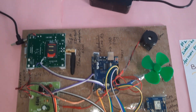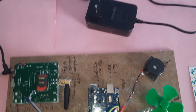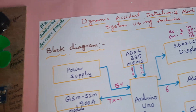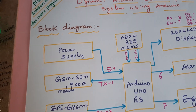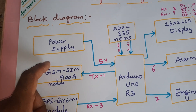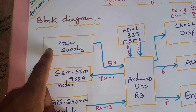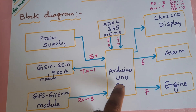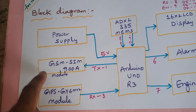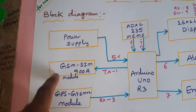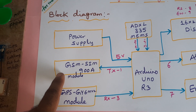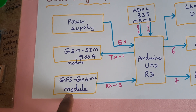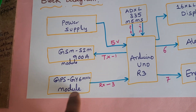Hi, we are from SVS Embedded. The project title is Dynamic Accident Detection and Alerting System using Arduino. In this project we are using a 9-volt adapter as input power source, getting pure DC 5 volts power supply given to the Arduino UNO R3 board and GSM SIM900A for SMS alert purpose with Google Map location. We are also using a GPS GY6M V2 GPS module.